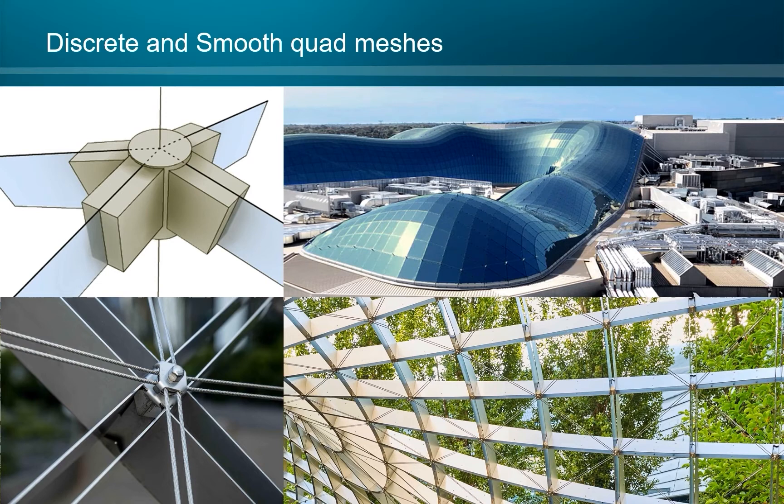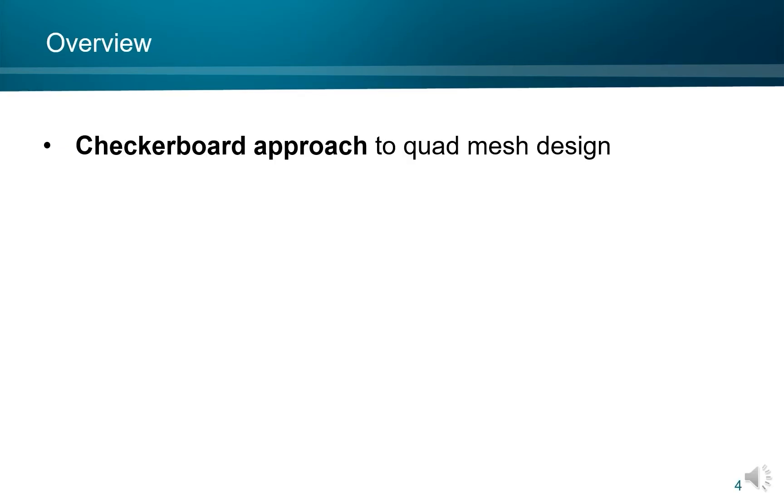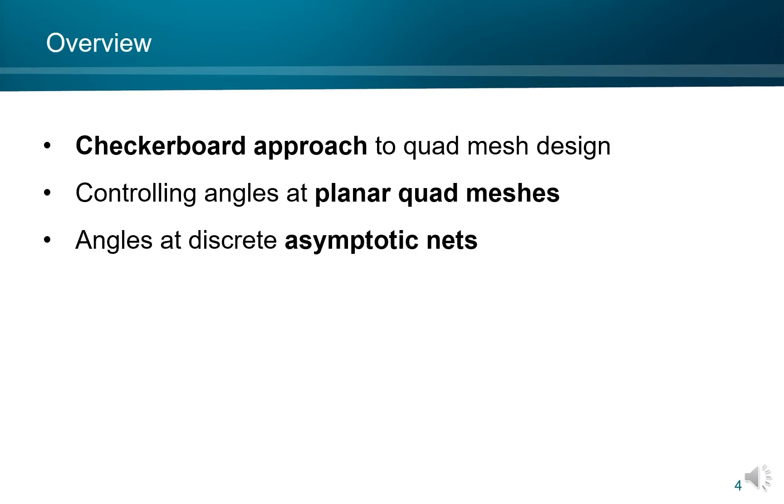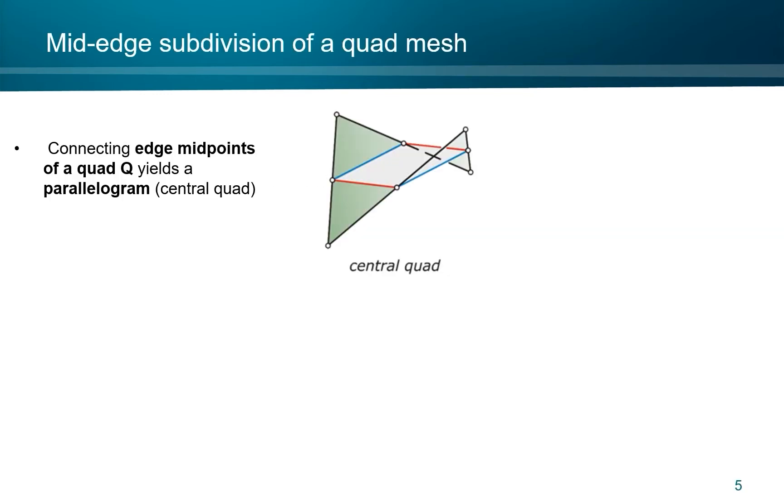Angles between neighboring edges or beams are different. Various solutions for dealing with angles in discrete structures have been proposed. Today we propose a very simple solution which we call the checkerboard approach. We first talk about controlling angles at planar quad meshes, then turn to angles at discrete asymptotic nets, and finally Eike will talk about the practical implementation as asymptotic grid shells. We start with a very simple geometric fact.